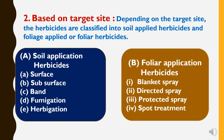The second classification of herbicides is based on target site. Depending on the target site, herbicides are classified into two categories: first, soil-applied herbicides; and second, foliage-applied or foliar herbicides. For soil application, the methods include surface method, subsurface method, band application, fumigation, and herbigation. For foliar application, the methods include blanket spray, directed spray, protected spray, and spot treatment.